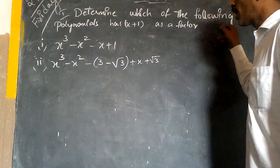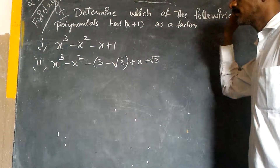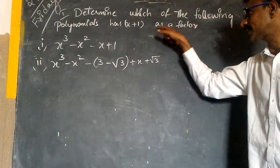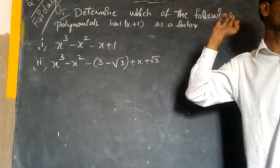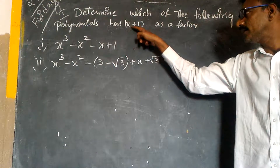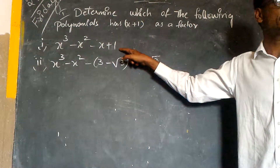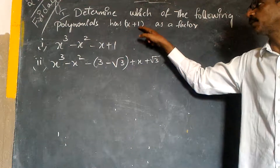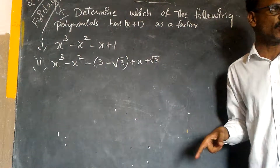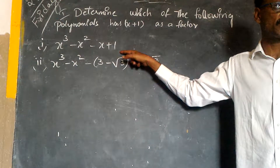Determine if x plus 1 is a factor of the given polynomial. We have to show whether it is a factor or not. If it is a factor, the zero of that polynomial must satisfy this one — meaning it gives zero. When we divide, if we get zero, then it is a factor; otherwise, it is not a factor.